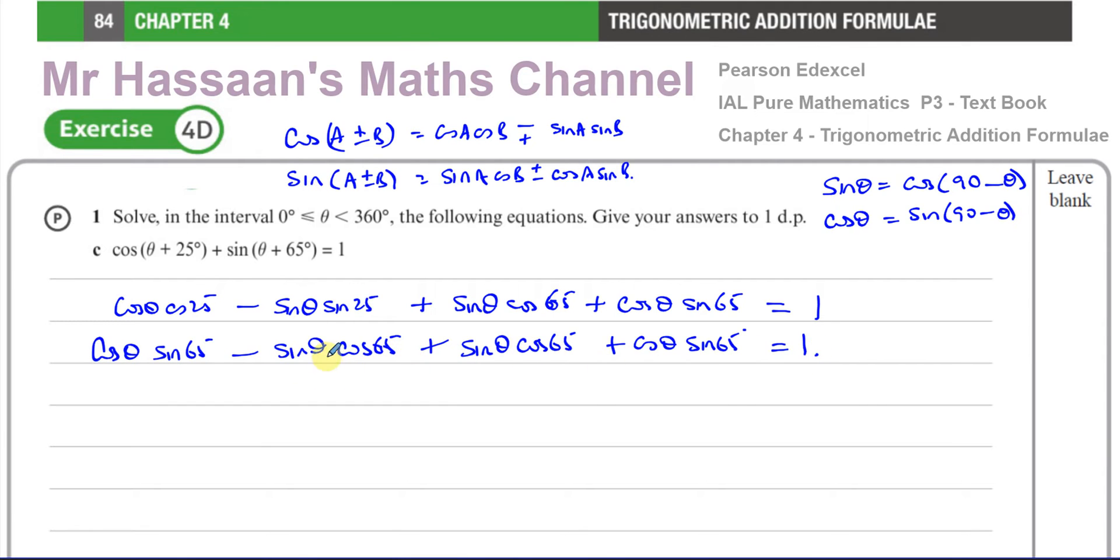Here we have these two terms now: minus sin(θ)cos(65°) plus sin(θ)cos(65°). They will become 0 because they're negative versions of each other. You're left with cos(θ)sin(65°) and cos(θ)sin(65°). Those are like terms.